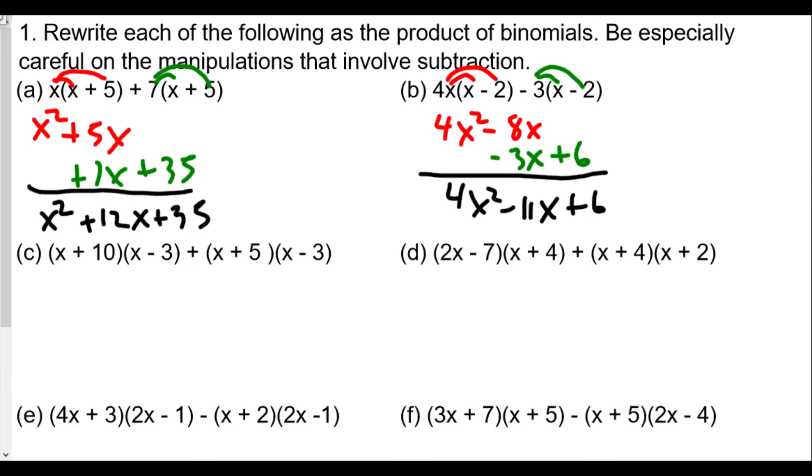Continuing, we have x times x, x times negative 3, 10 times x, and 10 times negative 3. So we get x squared minus 3x plus 10x minus 30.